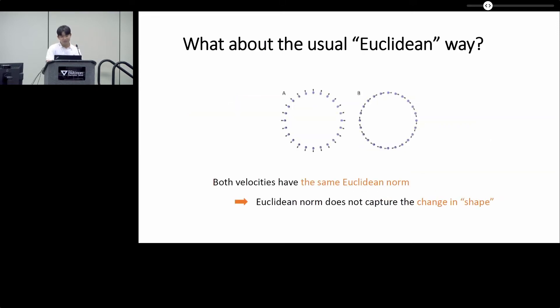But the Euclidean norm does not capture the shape change in the point cloud. For the example shown in the slide, the two moving point clouds A and B have the same Euclidean norms, although in case A, the shape change is much larger.